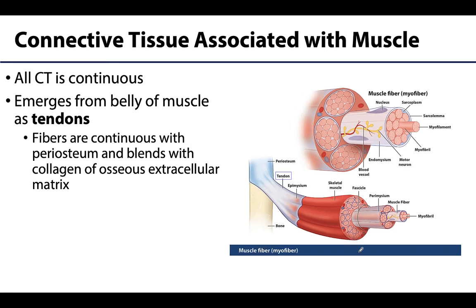Connective tissue will continue beyond the muscle belly as tendons. You can see that here — continuous with the epimysium, once we get past the muscle belly region, we call this a tendon. Tendons are going to connect the muscle belly to bone. It will actually be continuous with the periosteum — that periosteum surrounds a bone, and it will extend and become intermingled with the collagen of the osseous extracellular matrix. This is very important for the function of the musculoskeletal system: tension in the muscle, because of that close connection to the periosteum and the extracellular matrix, will cause the bone to move as well — a pulling of the bone.